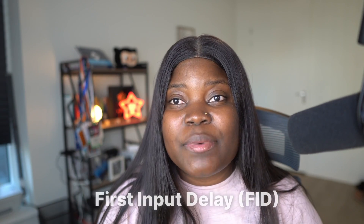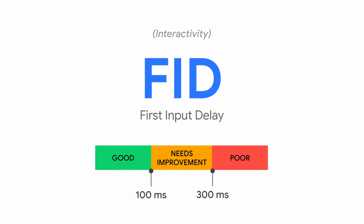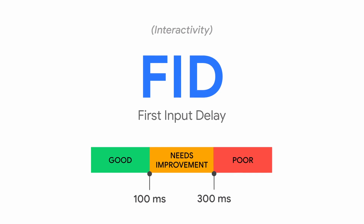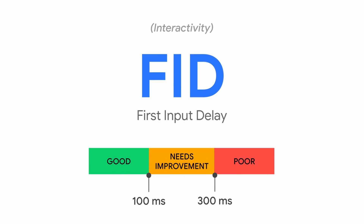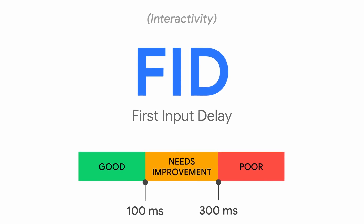First Input Delay is a measurement of the time between a user's first attempt to interact with a web page and when it actually responds. In other words, First Input Delay quantifies how quickly a person can first click on the screen and make something happen. According to Google's guidelines, a good First Input Delay score is around 100 milliseconds or less.